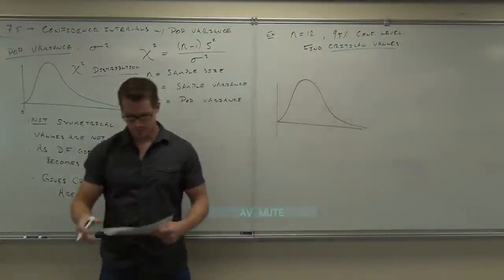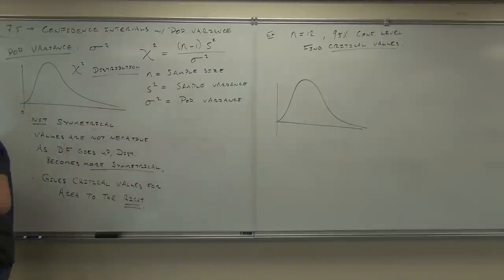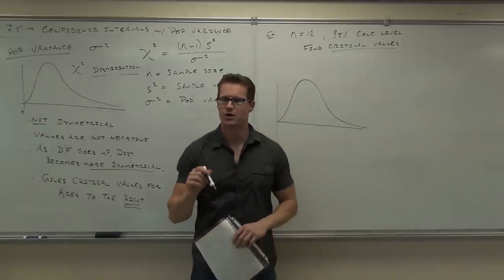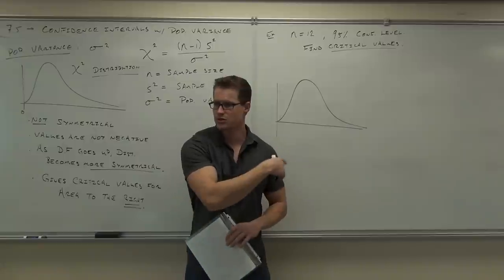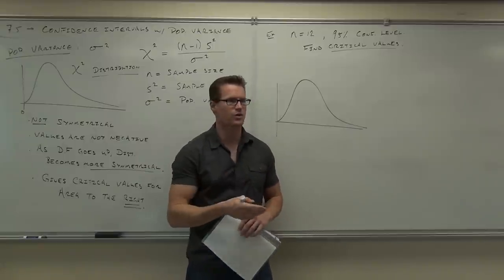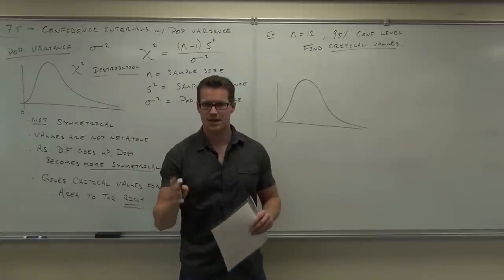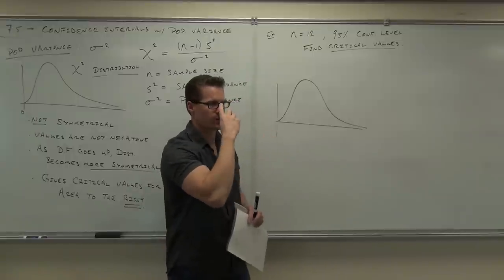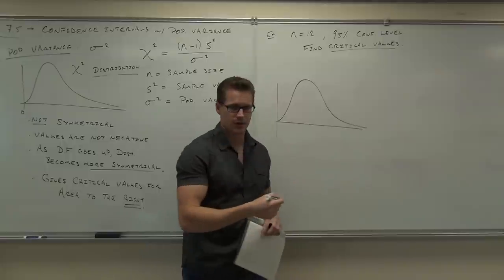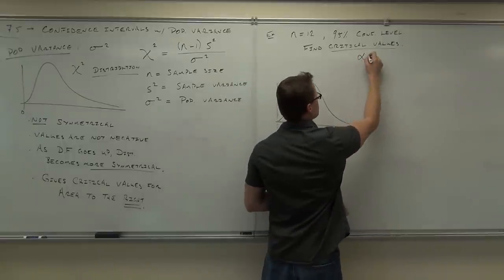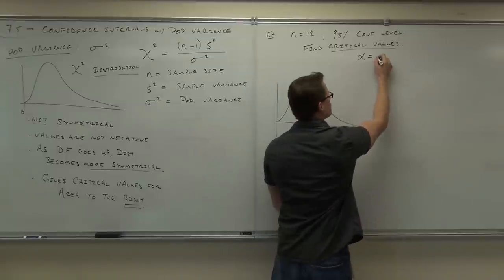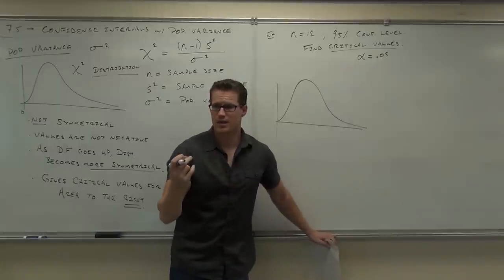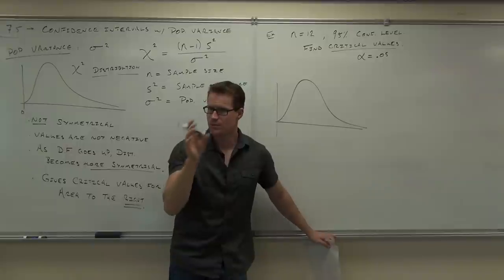Here's how your table is going to look. We're just focused on critical values right now. You're going to draw a chart, just like you normally would. Can you tell me what our alpha is? We know that alpha and confidence level are complementary — so one minus the confidence level gives us our alpha. Our alpha is 0.05.